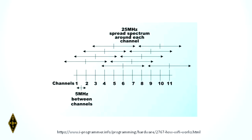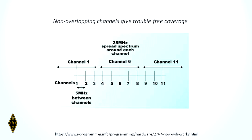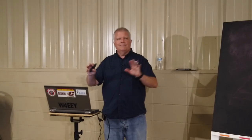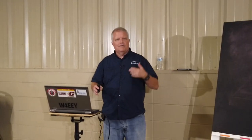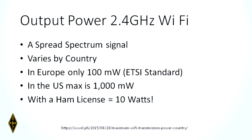Here's an overview of the 11 Wi-Fi channels. When you set up your Wi-Fi router you can pick a channel, but if you look closely, they all overlap. There are three channels you can use to avoid interference: channel 1, channel 6, and channel 11. That will give you maximum protection from interference. So 2.4 GHz Wi-Fi is a spread-spectrum signal. Output power in routers varies by country — in Europe you're limited to 100 milliwatts, and in America you're limited to 1,000 milliwatts, which is 1 watt.